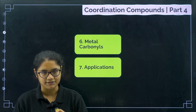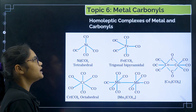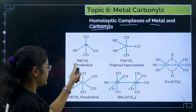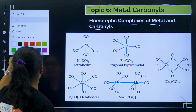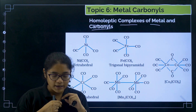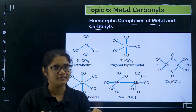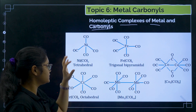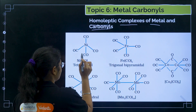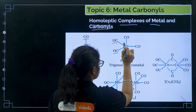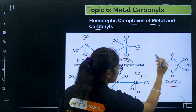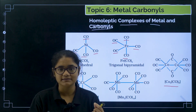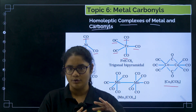Metal carbonyls means homoleptic complexes of metals and carbonyls. Examples include Ni(CO)₄, Fe(CO)₅, Co₂(CO)₈, Mn₂(CO)₁₀, and Cr(CO)₆. These are all homoleptic complexes — there is only one ligand, that is carbonyl. The key thing to remember is: metal carbonyls means there will be only carbonyl ligands and metal, no other ligands.